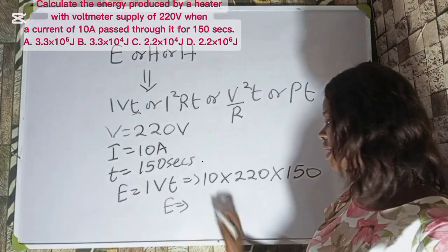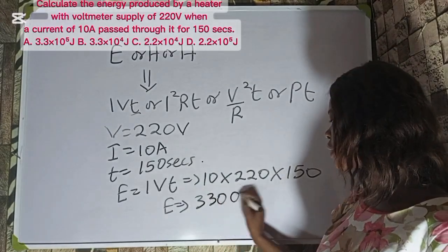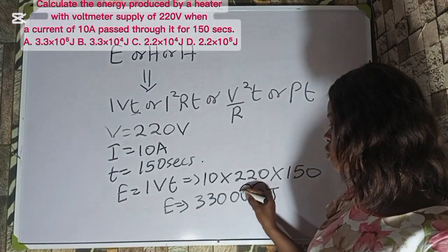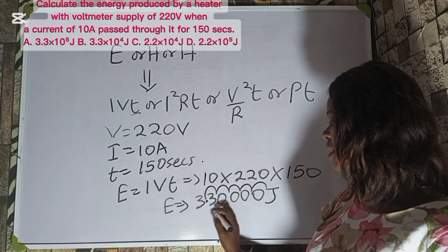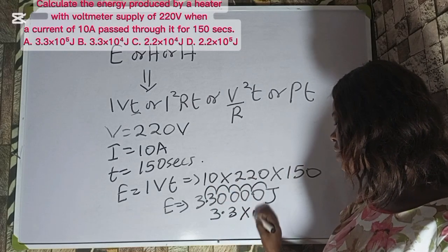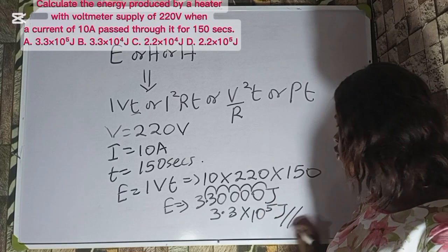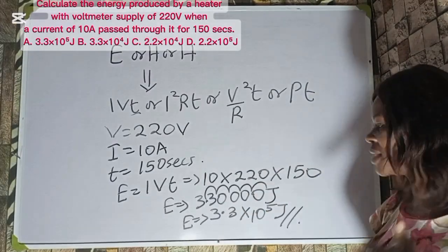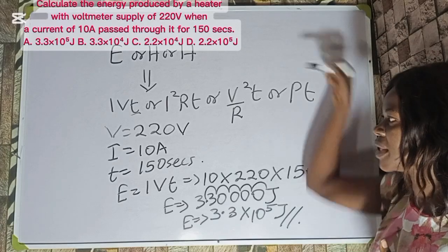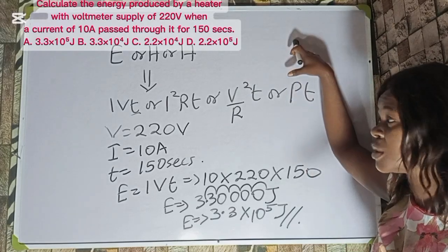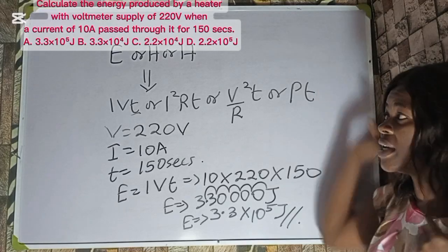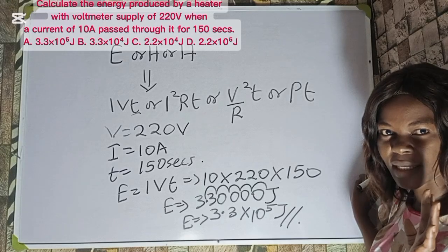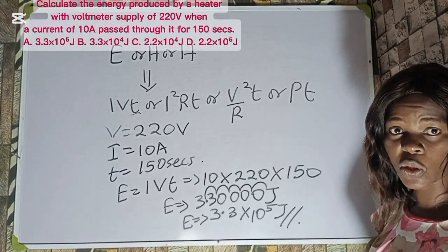Working it out: 10 × 220 × 150 = 330,000 joules, which in standard form is 3.3 × 10⁵ joules. Whether you have parameters like potential difference, resistance, or power and time, you can use any of the equivalent formulas. Remember, electrical energy, electrical heat, and electrical work done are all the same thing. The correct option to this question is option A.